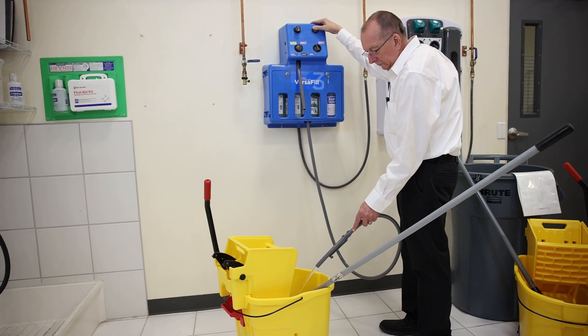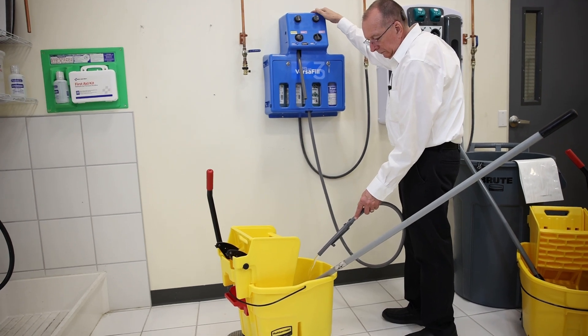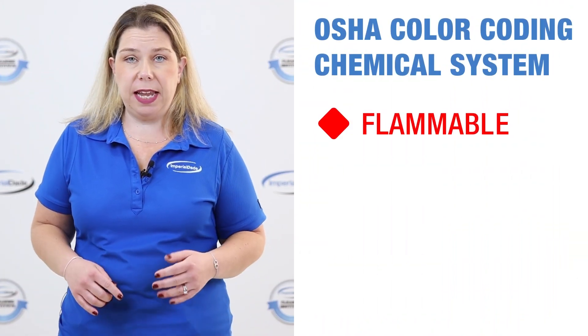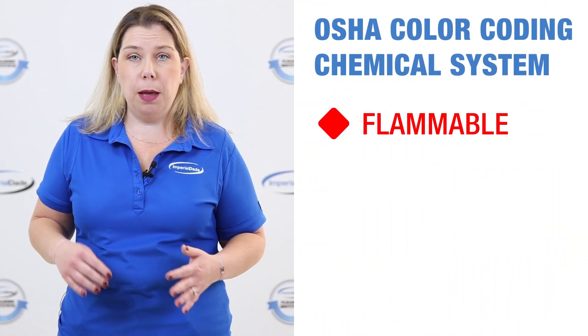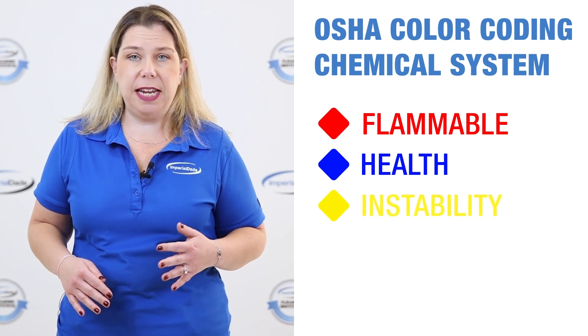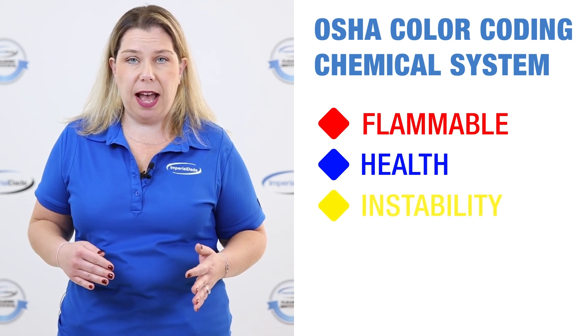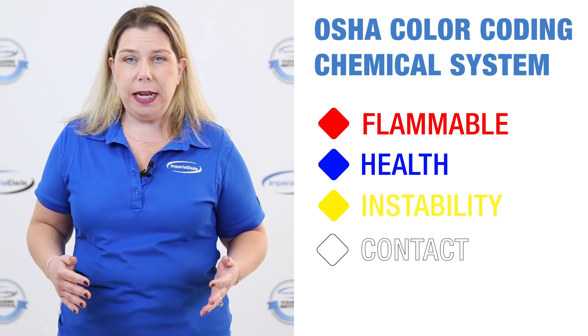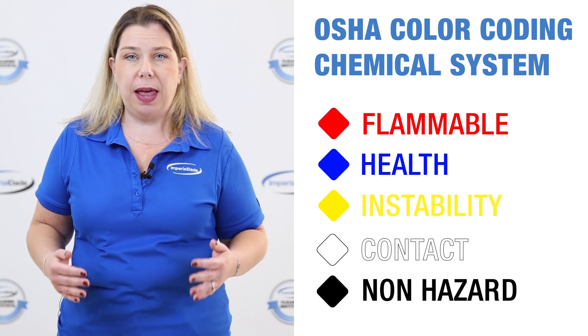Some facilities have their own system for color coding. However, there is an OSHA-approved color coding system that is widely accepted. In OSHA's color coding system, red indicates flammability, blue indicates a health hazard, yellow indicates instability hazards, white indicates a contact hazard, and black is used for chemicals that don't pose a safety threat.